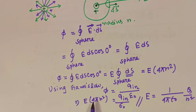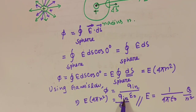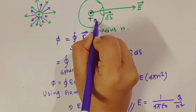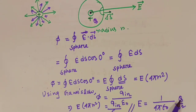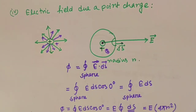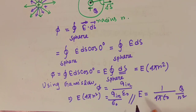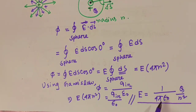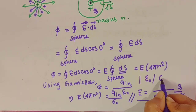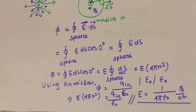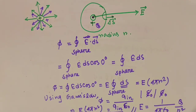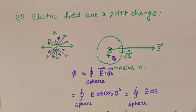Hence we can write E is equals to 1 divided by 4 pi epsilon naught, multiplied by Q divided by r squared. Here 4 pi r squared and epsilon naught from the denominator, and q inside we can write as capital Q. So our result - electric field due to a point charge by application of Gauss's law - is E equals 1 over 4 pi epsilon naught times Q over r squared. That's all for today. Thank you so much for watching.